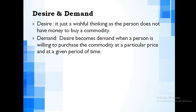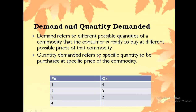Desire becomes demand when a person is willing to purchase the commodity at a particular price and at a given period of time. Simple meaning hai ki desire demand mein tab convert hota hai when the person has the purchasing power. Moving forward — demand and quantity demanded — there is again a minute difference between these two.